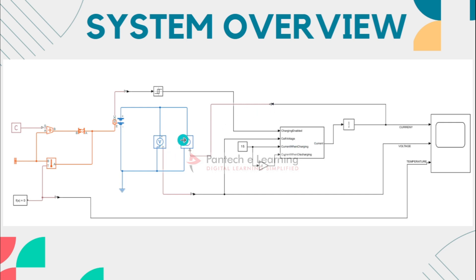Next is the constant current source block. This block generates a constant current signal that is applied to the battery during the charging and discharging process. The current value is determined by the input parameter current when charging.